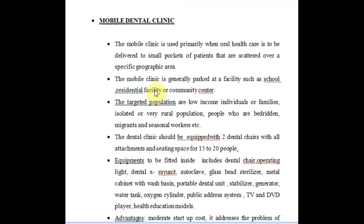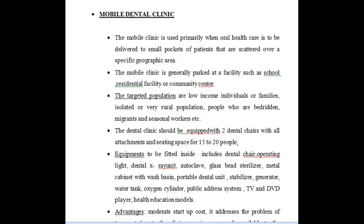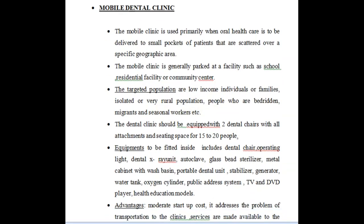The mobile clinic is generally parked at a facility such as a school, residential facility, or a community center. The target population includes low-income individuals or families, isolated or very rural populations, people who are bedridden, migrants, and seasonal workers.